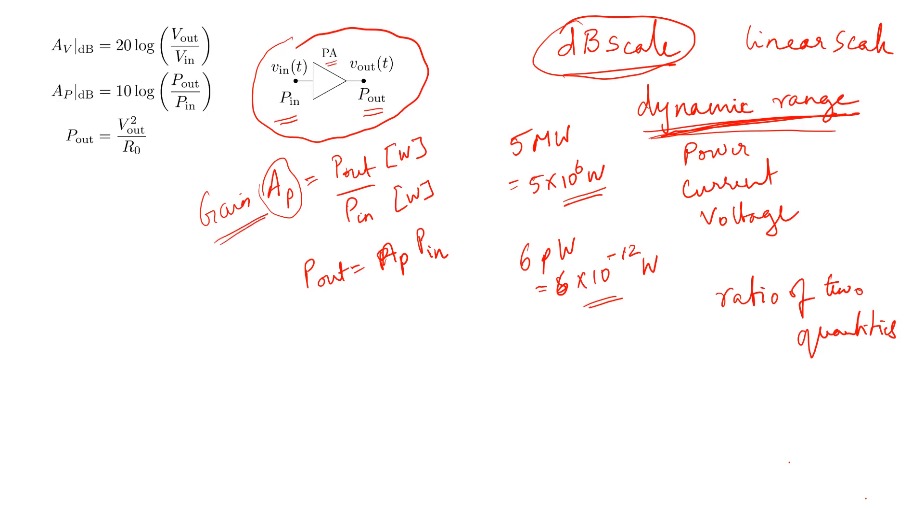Now this gain can be a very large number. It can be a factor of 1000, 10,000, and so on. So with such large amounts of gain, it's better to represent the gain in dB scale. And this being the linear gain, the dB gain is going to be specified in dB.